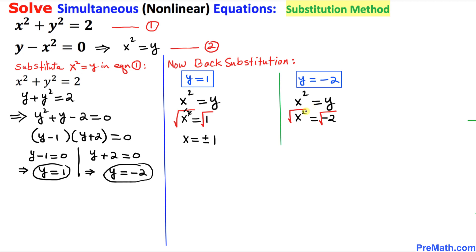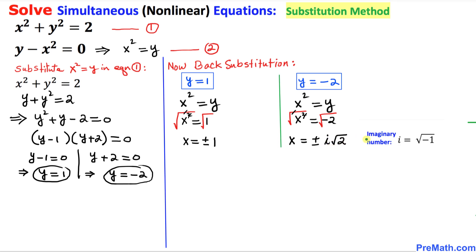So this square and square root they undo each other. So x turns out to be equal to positive or negative i times square root of 2 where this i is called an imaginary number and i is always equal to square root of negative 1. And we know that this is a complex number so that means it is not a real number. That's the reason why we are not going to consider it.